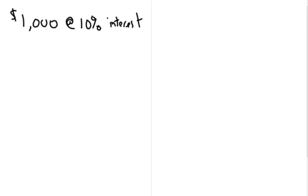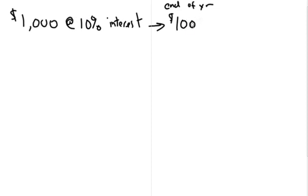A classic example is money in a bank. If you put a thousand dollars in the bank, they're going to lend it out to other people and make money from it, and they'll say they'll give you 10% interest — which means at the end of the year they take ten percent of what you gave them and give that to you. So you get an extra hundred dollars, ending up with one thousand one hundred dollars.